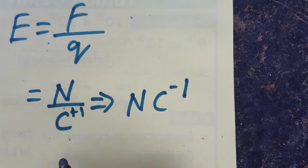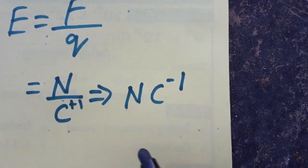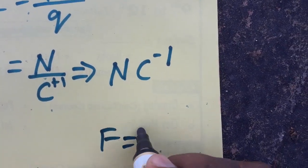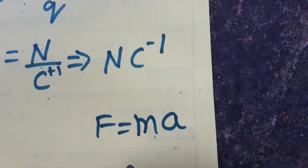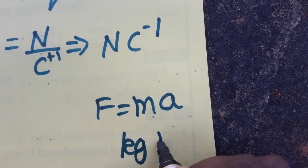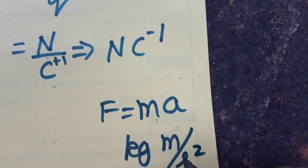Newton is the force SI unit. Force F is equal to M times a, mass into acceleration. So kg meter per second squared, it is force.